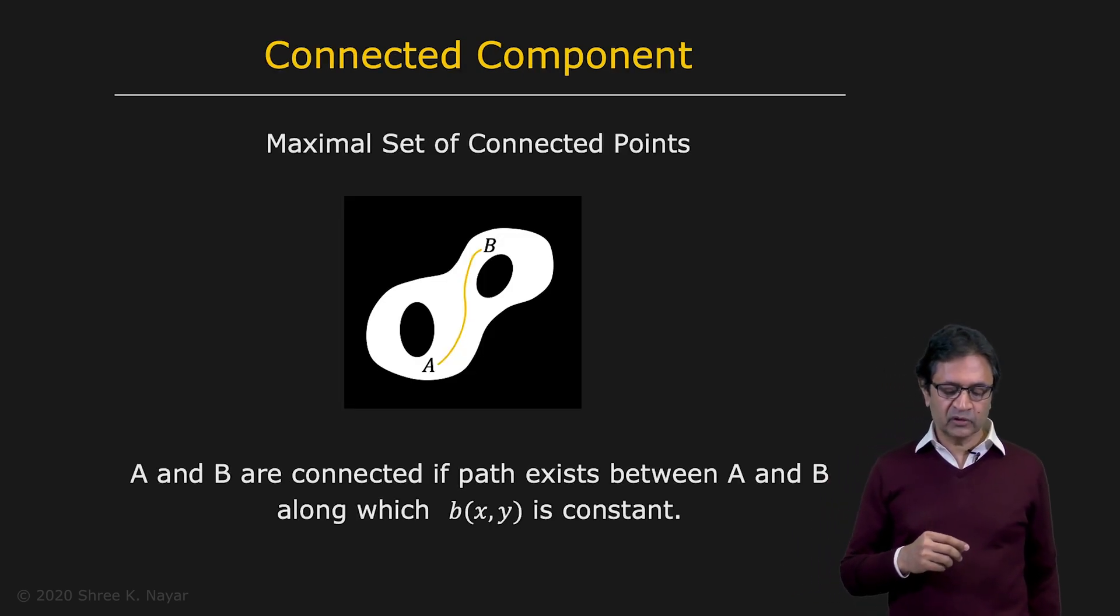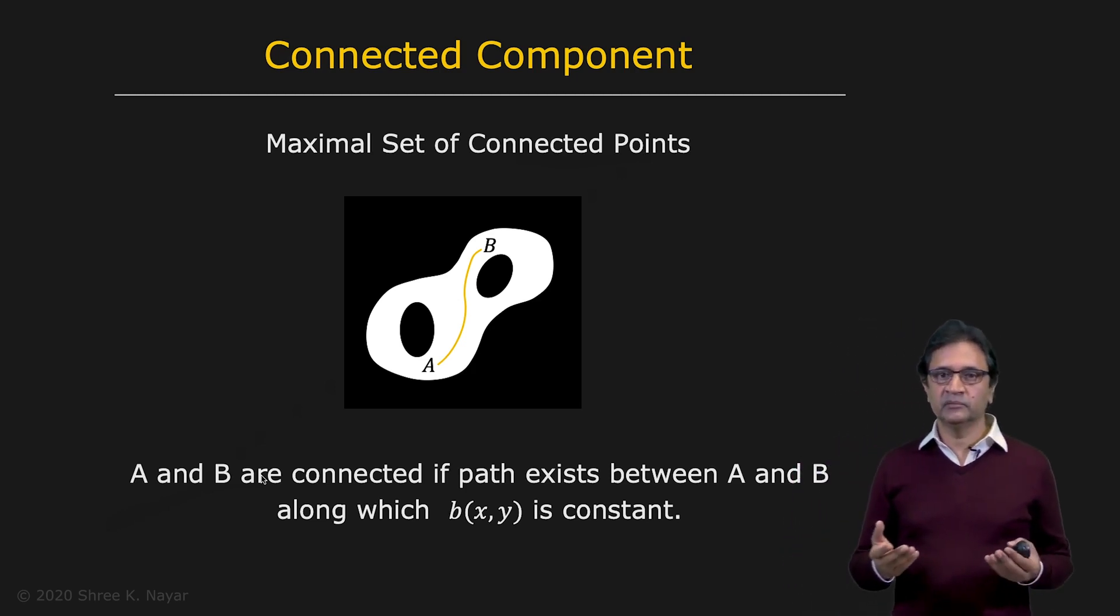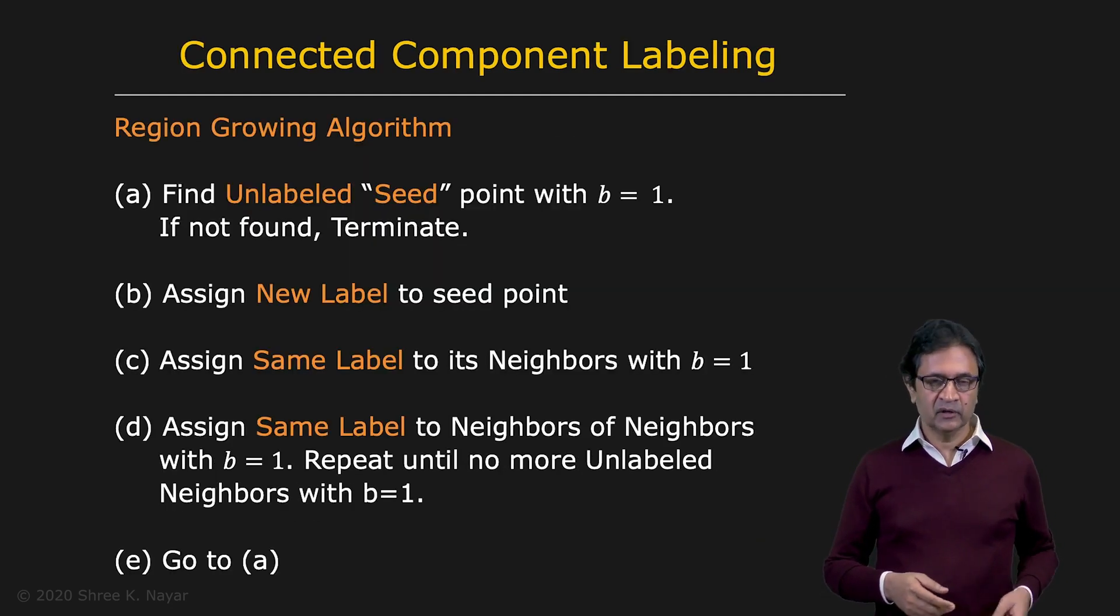So this brings us to the notion of a connected component. An object is really a connected component. It's a maximal set of connected points. And two points A and B are connected if there exists a path from A to B along which B, the binary image, the characteristic function, is constant. So bearing that in mind, let's look at our first algorithm for labeling, for segmenting a binary image. It's called region growing.